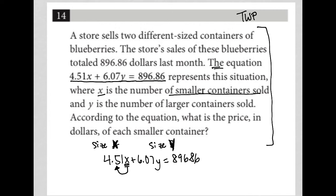So the price per container here, the price per small container must be $4.51 because that's the number that's associated with the X, right? So the price per large container is $6.07,